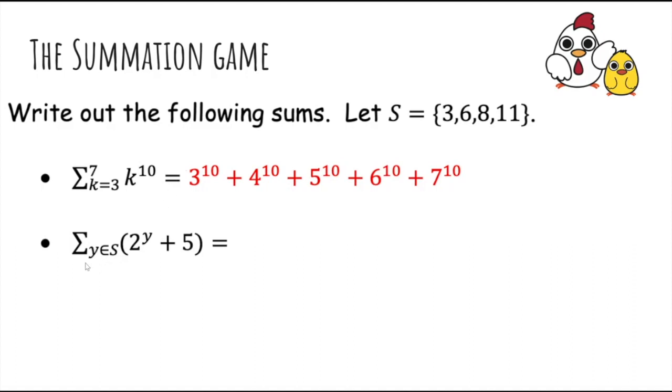Okay, here we loop through all values of s, and for all values y in s, we go 2 to the y plus 5. So the first element in s is just 3, so we plug in 3 for y, so we have 2 to the 3 plus 5. The next element is 6, so we get 2 to the 6 plus 5, then 2 to the 8 plus 5, and then the last one, 2 to the 11 plus 5.